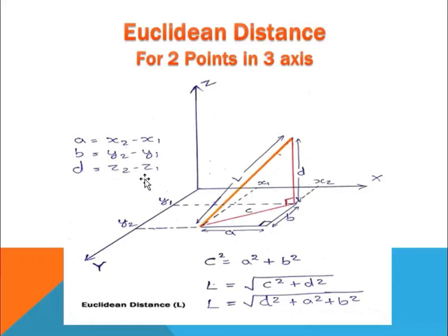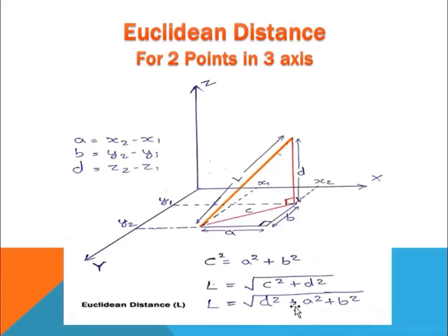Here 'd' is the z-axis distance between the two points, that is z2 minus z1. We can see that c² = a² + b². To calculate the Euclidean distance L between the two points, L equals the square root of c² plus d², and since c² = a² + b², the Euclidean distance is the square root of d² + a² + b², where a, b, and d are (x2 - x1), (y2 - y1), and (z2 - z1) respectively.